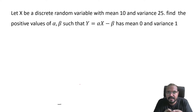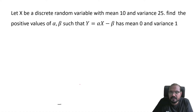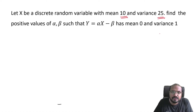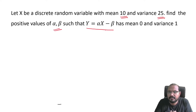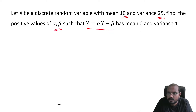Let x be a discrete random variable with mean 10 and variance 25. Find the positive values of alpha and beta such that y equals alpha x minus beta has mean 0 and variance 1.